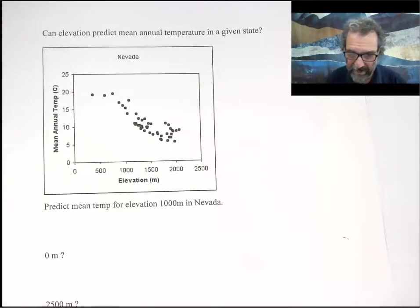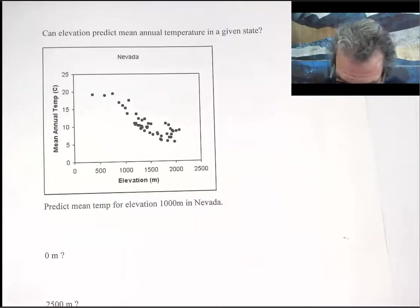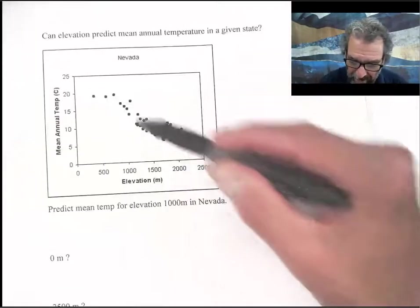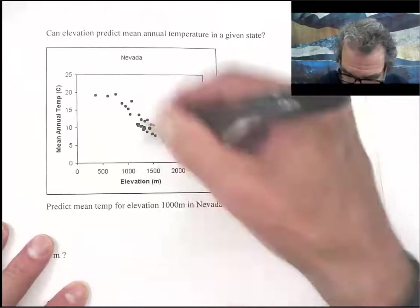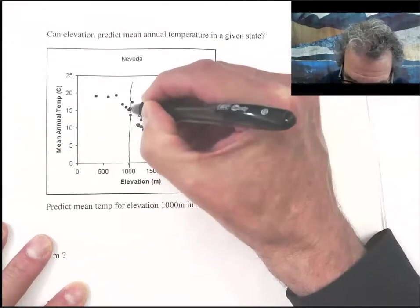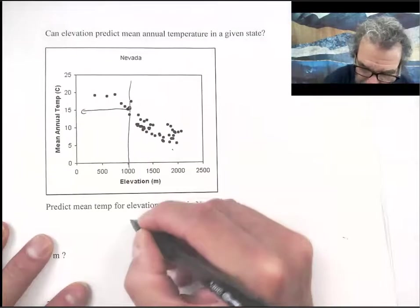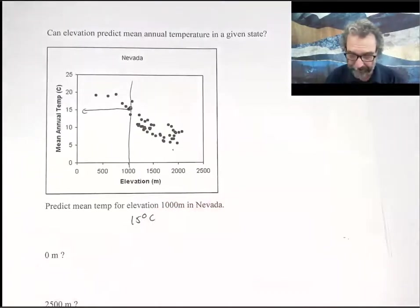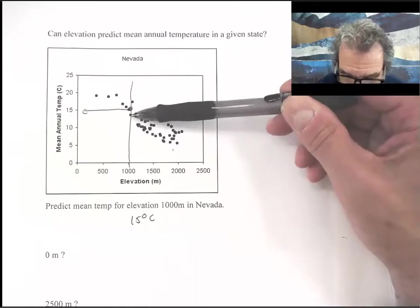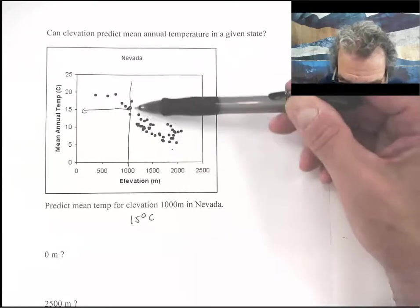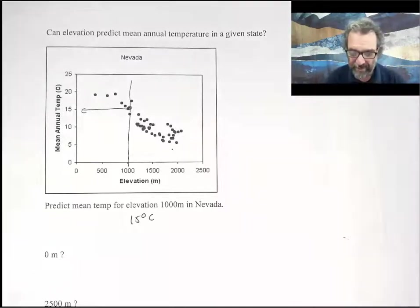Finally, we have our final graph. Can elevation predict mean annual temperature in a given state? The state is Nevada. Here's our data. It's fairly strong, fairly easy to predict. Temperature at elevations like 1000 meters. Those are meters. So we go here. We predict that value. Maybe 15 degrees like that. And the range of values at that elevation is pretty narrow. So it's plus or minus maybe two degrees. That's pretty good. It's not like it's all over.